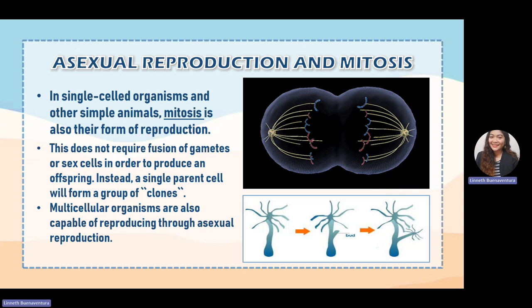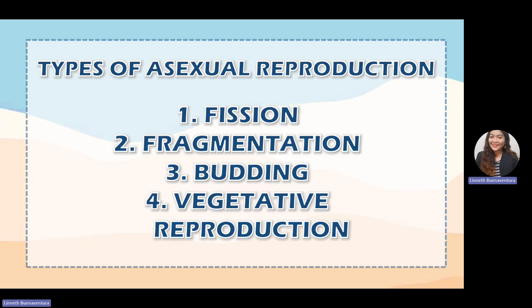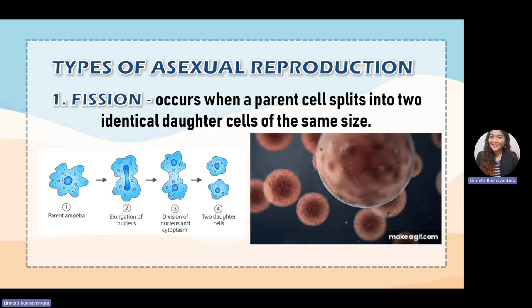Multicellular organisms are also capable of reproducing through asexual reproduction. As seen on the PowerPoint, this is an example of mitosis where the genetic information of the parent cell is divided into two to create two identical daughter cells. In other animals, there are different ways of asexual reproduction. We have four types: fission, fragmentation, budding, and vegetative reproduction.